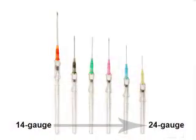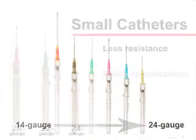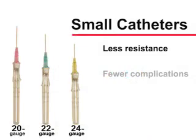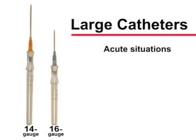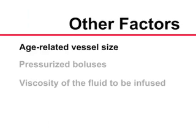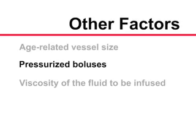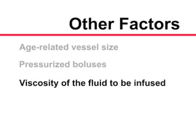The size of the catheter selected will depend on the clinical situation. The smallest effective catheter should be used because small catheters allow for less resistance to blood flow around the cannula and are associated with fewer complications. Large catheters, such as 14 and 16 gauge, are used in acute situations for fluid resuscitation — for example, in managing hypovolemia in a trauma patient or in a patient with severe dehydration. Other factors that may influence catheter size include age-related vessel size, the need for pressurized boluses for administration of contrast or medication, and the viscosity of the fluid to be infused.